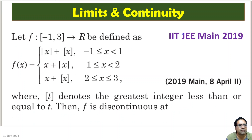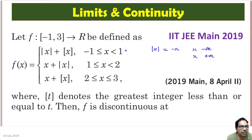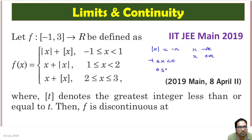So, for the interval minus 1 to 1, what is the absolute value of x? This is equal to minus x if x is negative, otherwise x if x is positive. Now, minus 1 to 1 means between minus 1 to 0 it is negative and 0 to 1 it is positive. Let us break this part into two parts: minus 1 ≤ x < 0 and 0 ≤ x < 1.